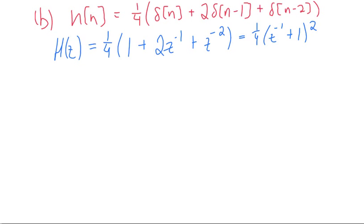And now if we let z equal e^(jω), we can find the frequency response, which is h(jω) equals one-fourth times (e^(-jω) + 1) squared.